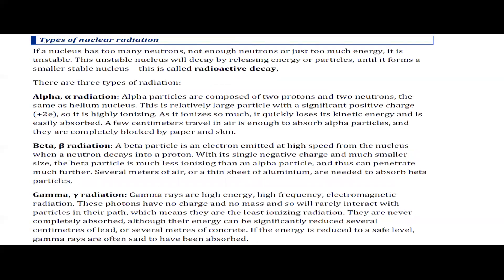The types of radiation emitted from radioactive nuclei are alpha, beta, and gamma. A nucleus becomes unstable if it has too many neutrons, not enough neutrons, or too much energy. Any of these conditions causes it to emit radiation, which we call radioactive decay.